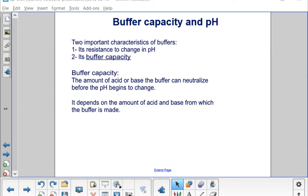Buffer capacity is the amount of acid or base the buffer can neutralize before the pH begins to change. So how much can you add and have the buffer still resist those changes in pH? The buffer capacity depends on the amount of acid and base from which the buffer is made.